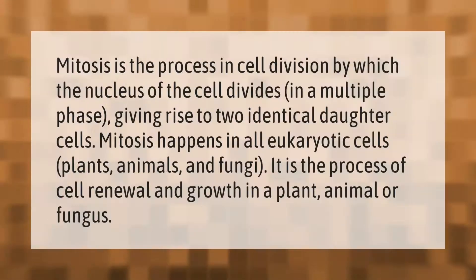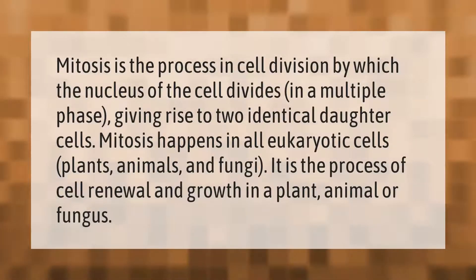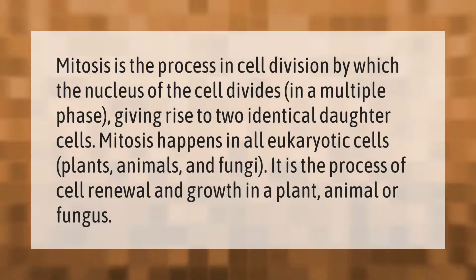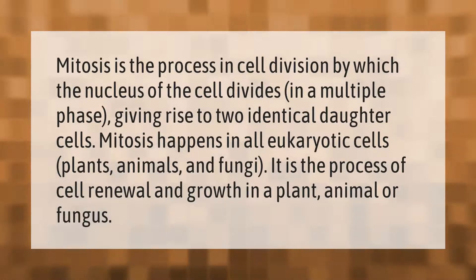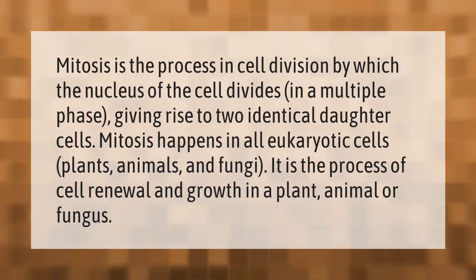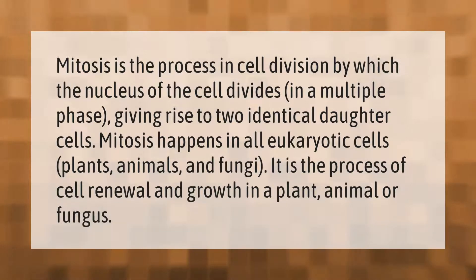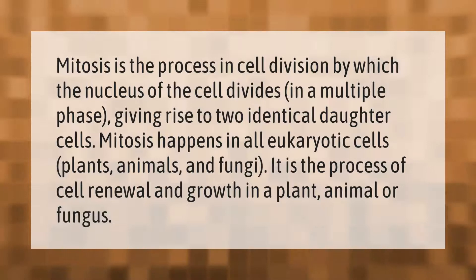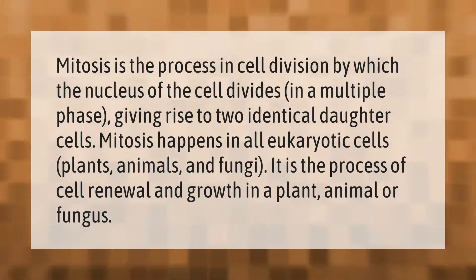Mitosis is the process in cell division by which the nucleus of the cell divides in a multiple phase, giving rise to two identical daughter cells. Mitosis happens in all eukaryotic cells — plants, animals, and fungi. It is the process of cell renewal and growth in a plant, animal, or fungus.